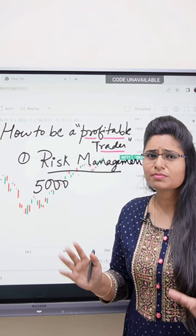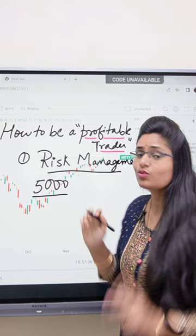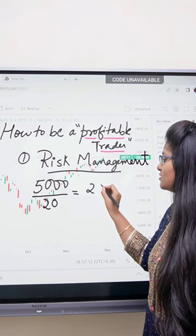So, 5,000 divided by 20 trading days equals 250. That means 250 is my daily risk — I won't allow a loss in the month to exceed 5,000.